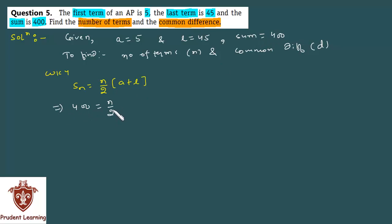400 is equal to n by 2, n is what you have to find, into first term A available as 5 plus last term L is 45. On solving further we get 400 is equal to n by 2 into 45 plus 5 is 50.